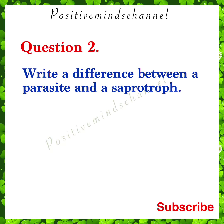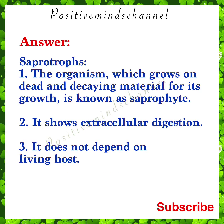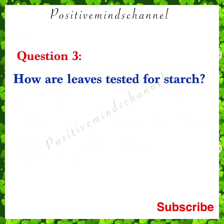Question 2: Write the difference between a parasite and a saprotroph. Parasite: the organism which depends upon other organisms for its nourishment and growth is known as a parasite. It has intracellular digestion. It causes harm to the organism. Parasites feed on living organisms called hosts. Saprotrophs: the organism which grows on dead and decaying material for its growth is known as a saprophyte or saprotroph. It uses extracellular digestion and does not depend on a living host.